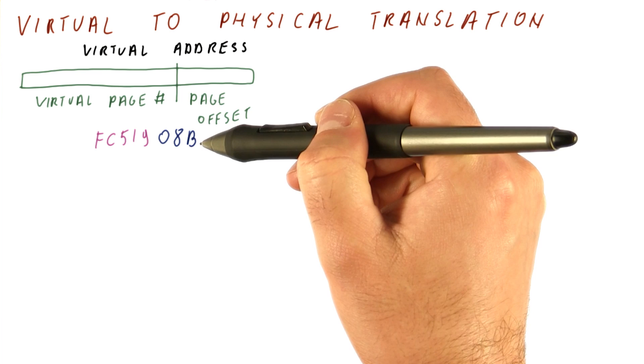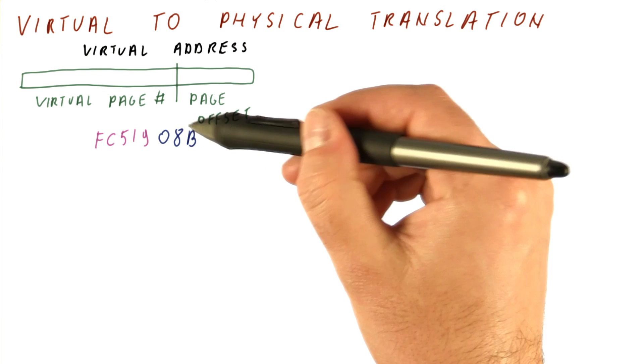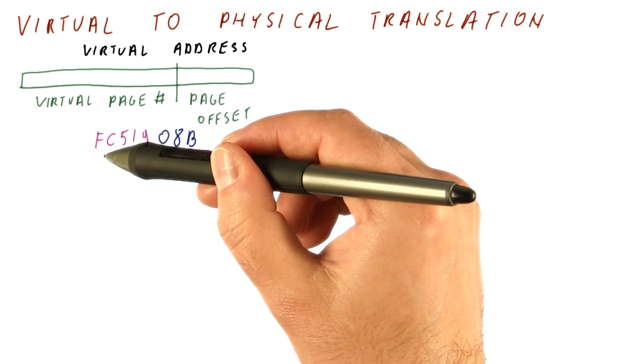Let's consider the address FC51908B, which is a 32-bit address. The least significant 12 bits tell us where in the 4 kilobyte page we are—that's the page offset. The more significant bits tell us what the virtual page number is.